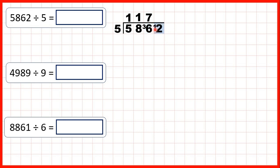Now we have 12 divided by 5. The closest number to 12 in the 5 times table is 10, and that's 2 times 5. But 2 times 5 is 10, and we need 2 more to get to 12, so we get a remainder of 2 in our answer. So that's 1,172 remainder 2.